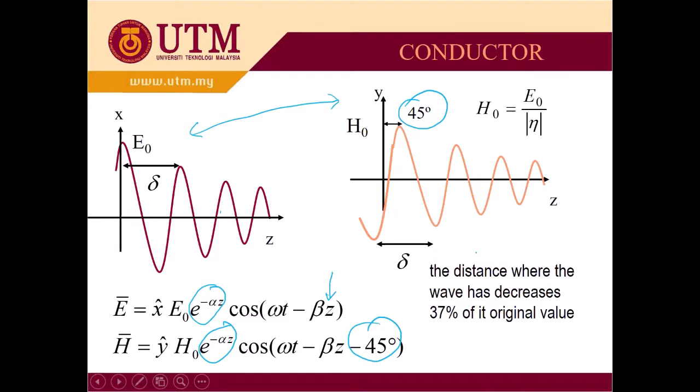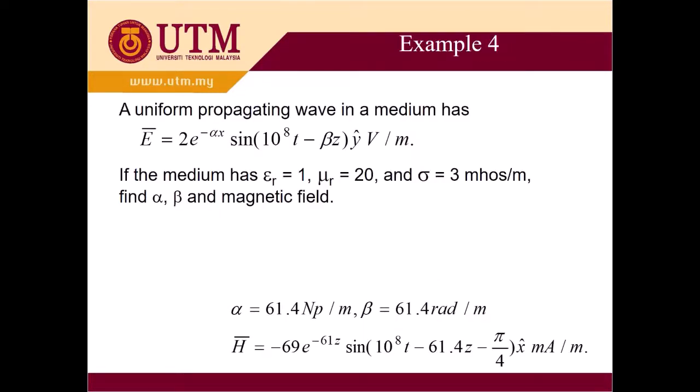So this is the skin depth, the distance where the wave has decreased to 37% of its original value. This is to represent the skin depth of the electric field, the penetration of the field inside the conductors. Let's see example 4.